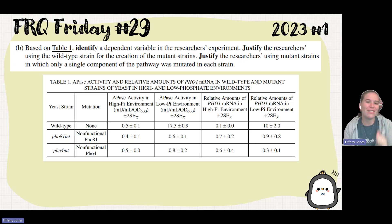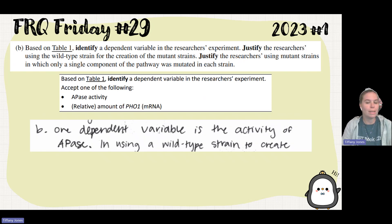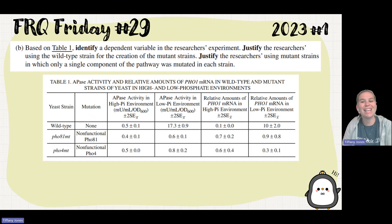Part B, based on table one, identify a dependent variable in the researcher's experiment. The dependent variable is what is going to change because of whatever the experimenters are testing. They changed the mutations, and we're seeing the results from it. So I'm going to see APase activity. I'm also going to see the relative amounts of the PHO1 mRNA. So there's two different answers here. You could have said APase activity, or you could have said the PHO1.